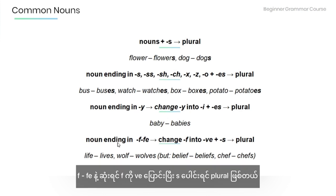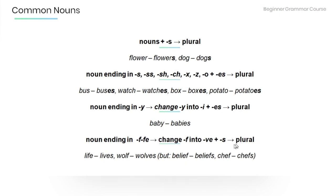Nouns ending in F or FE change into VE plus S to make a plural. For example: life → lives, wolf → wolves. But belief → beliefs, chef → chefs.